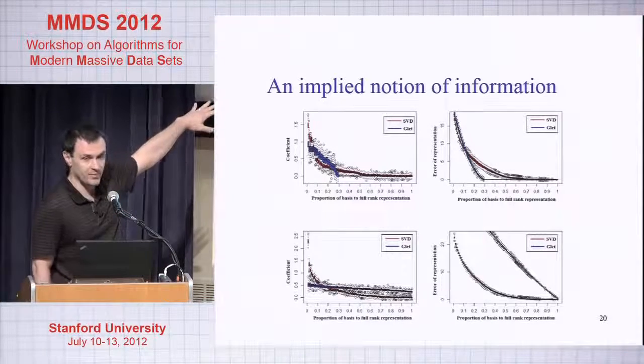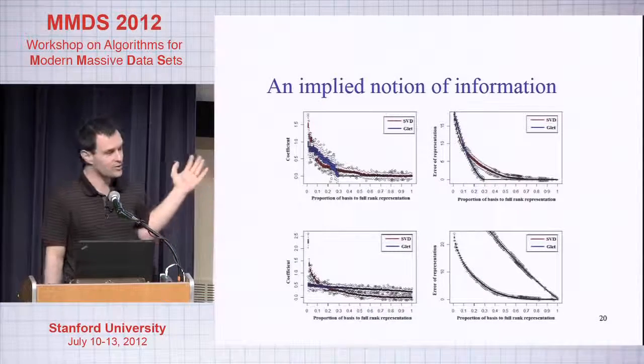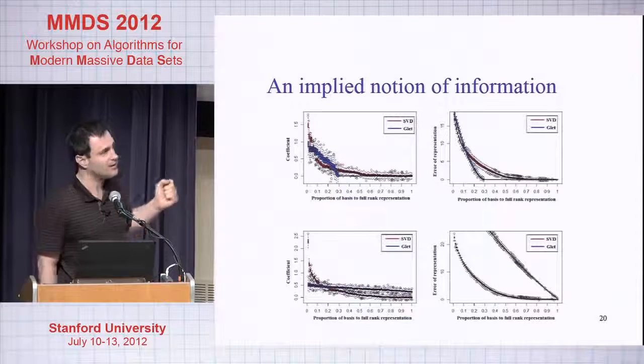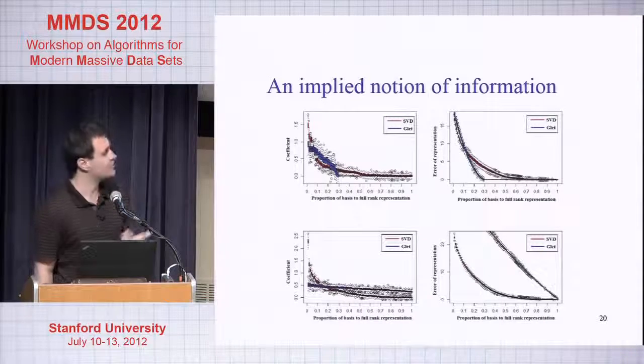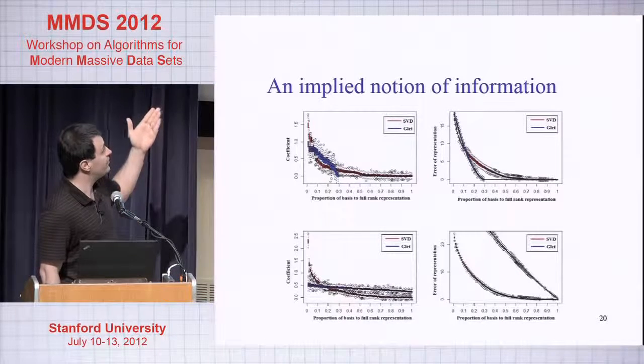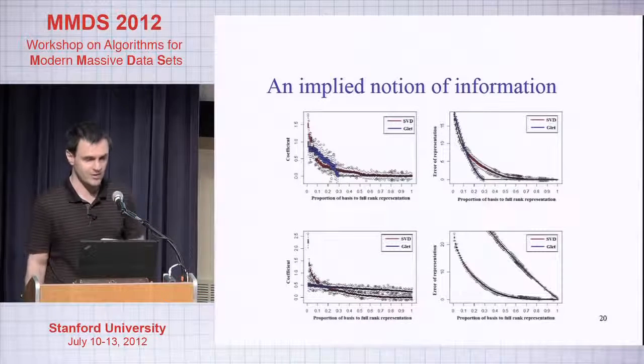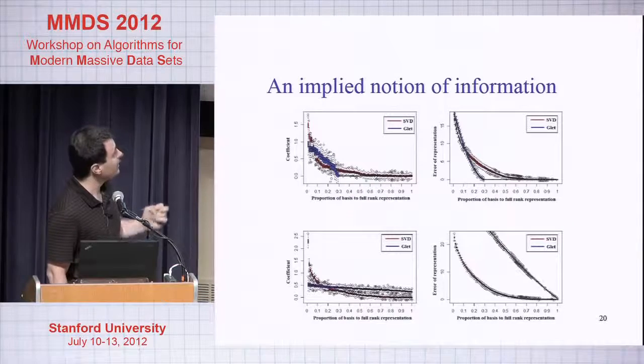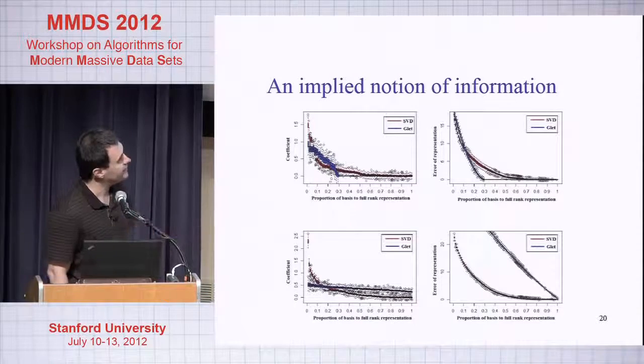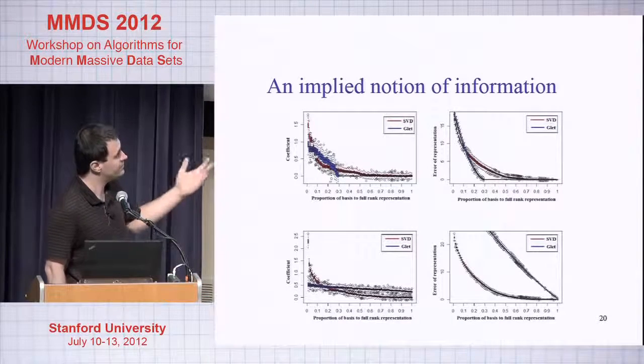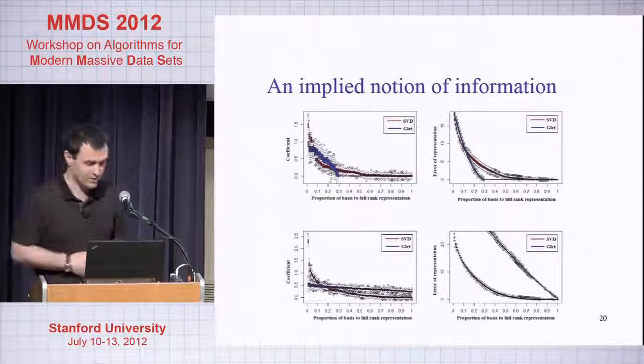the Graphlet coefficients are spread all over the place, whereas SVD always finds some signal. If you analyze a real blocky graph that contains some social information, then very few coefficients in the Graphlet, thirty percent of the coefficients in the Graphlet decomposition are positive and the rest are all zero, and again the SVD always finds something.